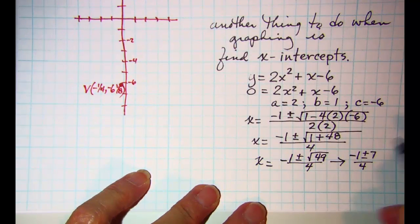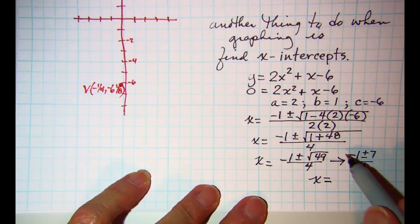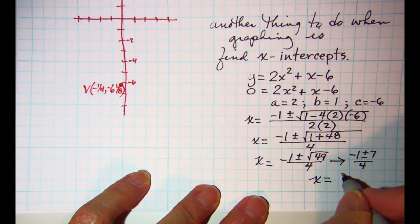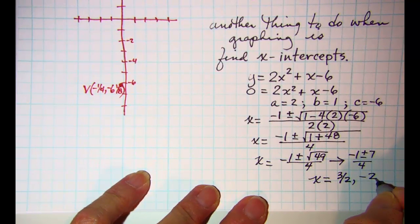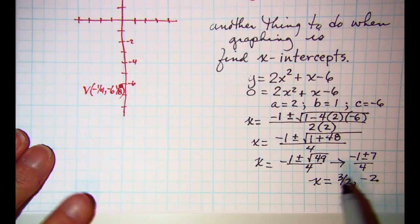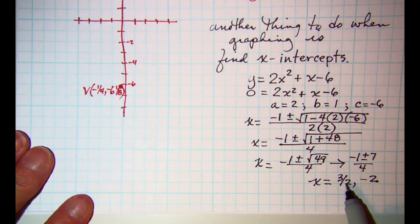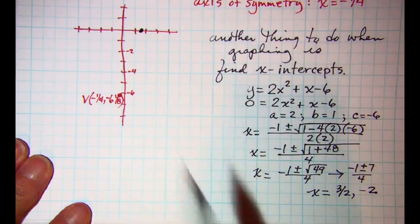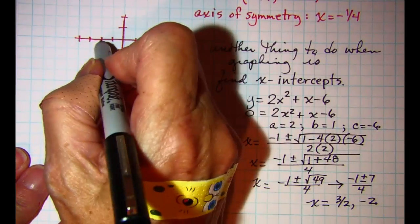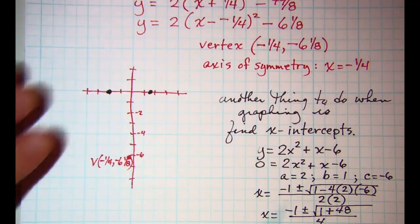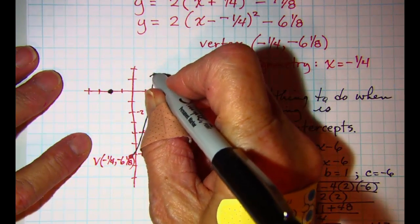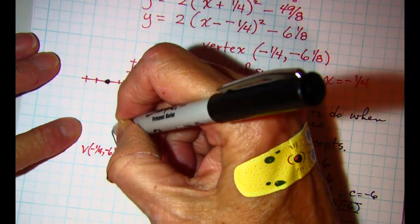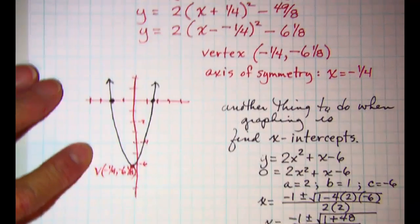So I have negative 1 plus or minus root 49 over 4, negative 1 plus or minus 7 over 4. So it looks like x is equal to negative 1 plus 7 is 6 over 4 which is 3 halves and negative 1 minus 7 is negative 8 over 4 which is negative 2. So my x-intercepts are one and a half and negative 2. And that gives us two points and they're pretty far away from my vertex and I can draw my graph.